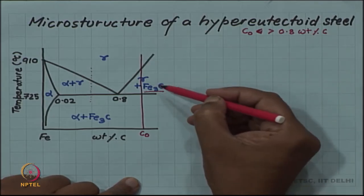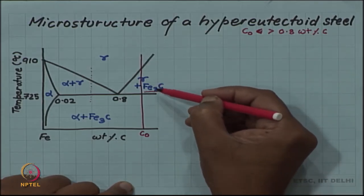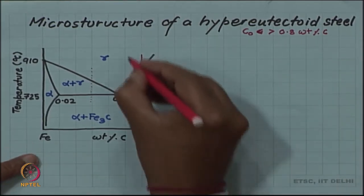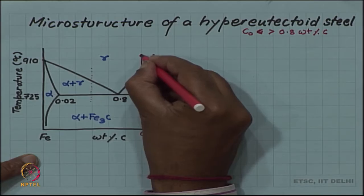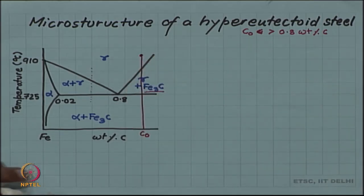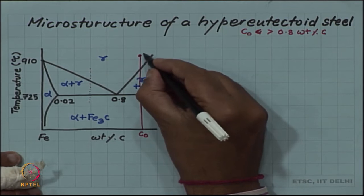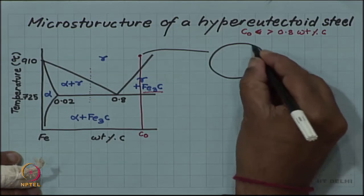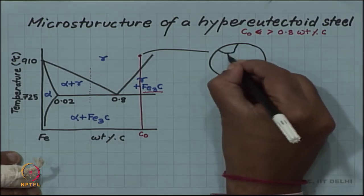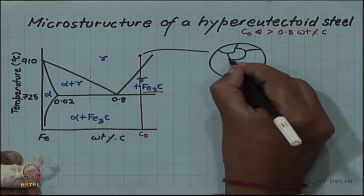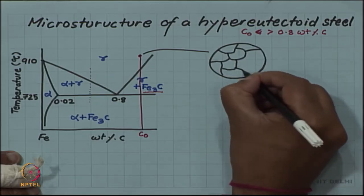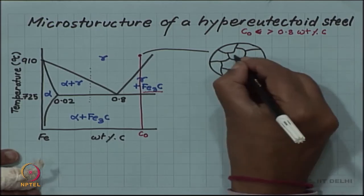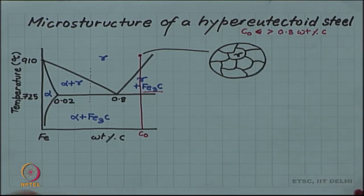You get proeutectoid cementite and then you get pearlite. That is the only difference. Here also at a higher temperature you will have in the single phase field austenite, polycrystalline austenite with grains and grain boundaries.